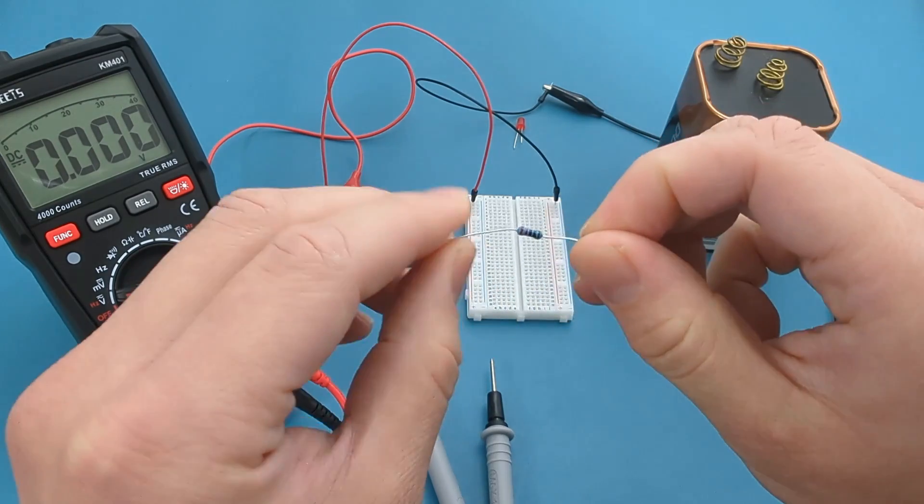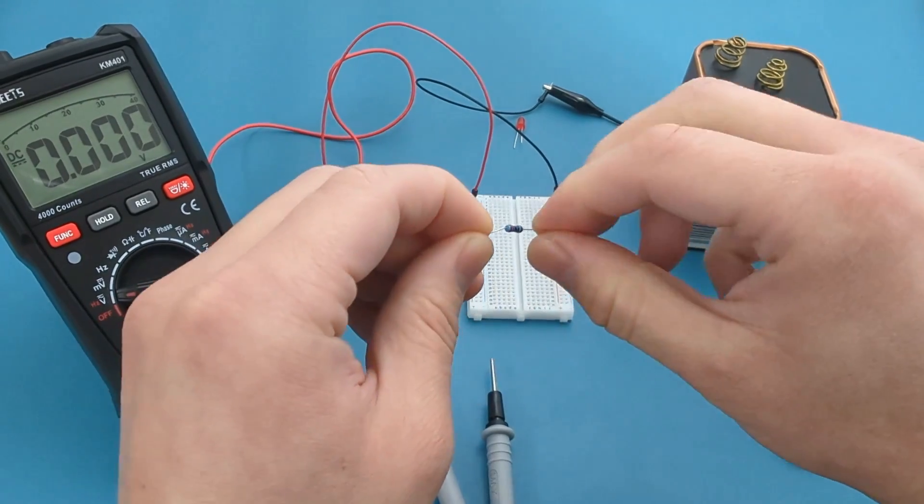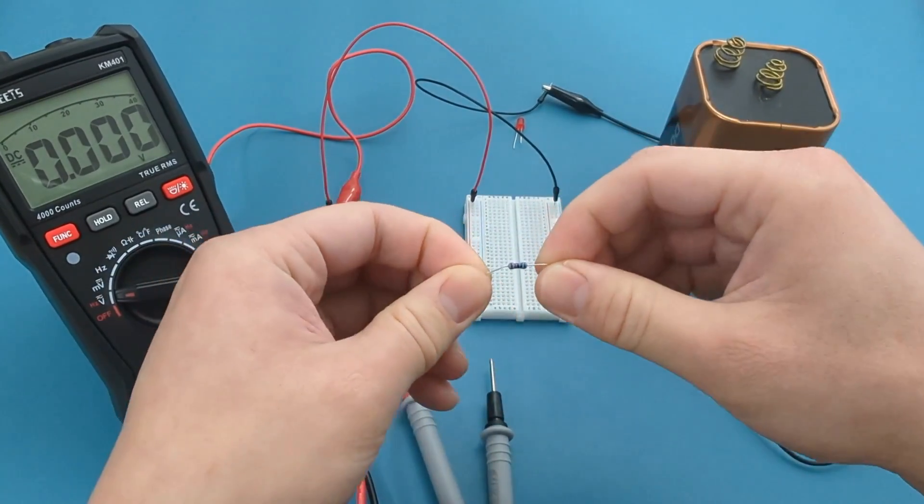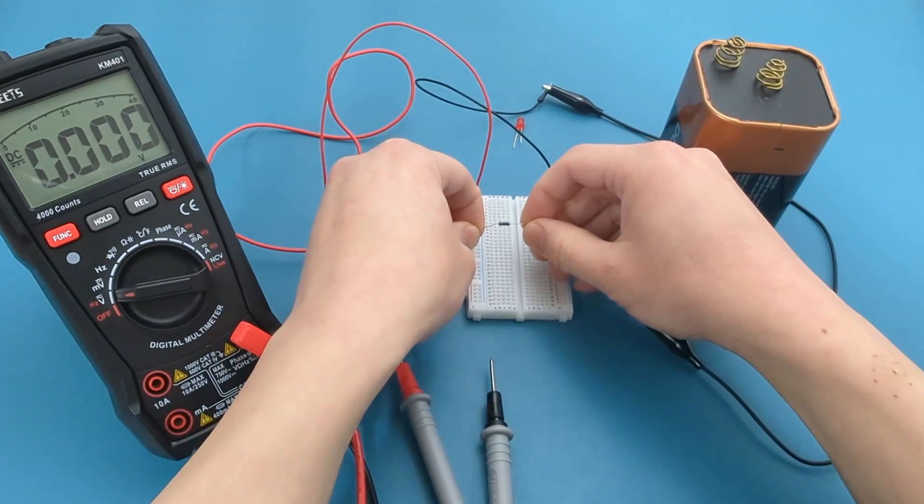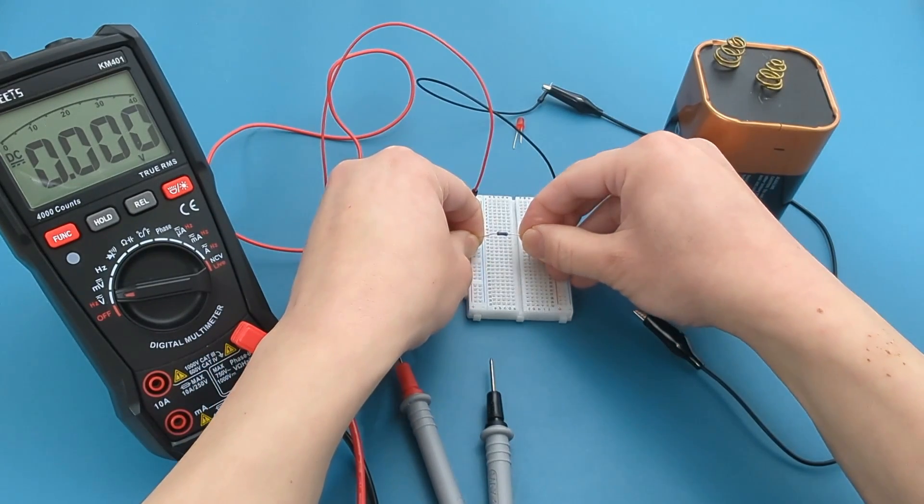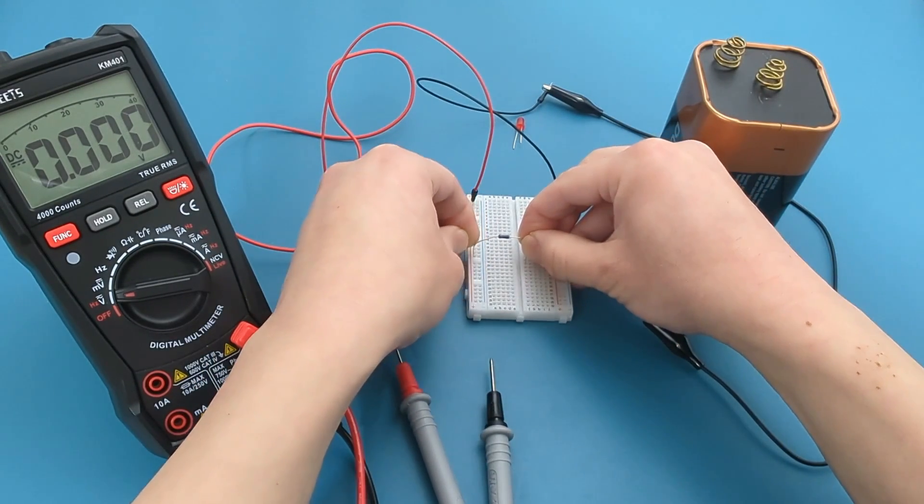Bend the wire ends of the resistor downward so they can be inserted into the breadboard. Insert one end of the resistor to the same column as the positive end. Attach the other end to the middle column.